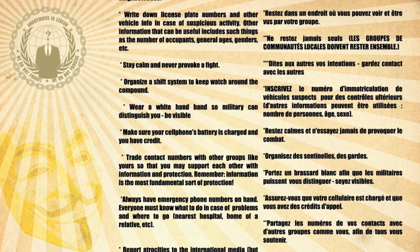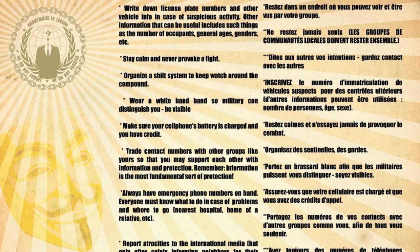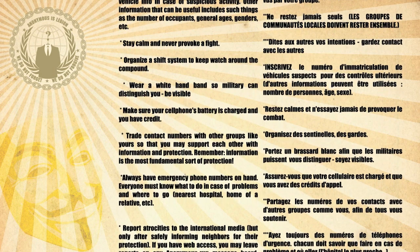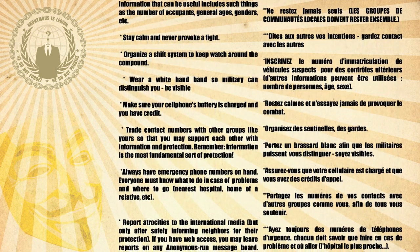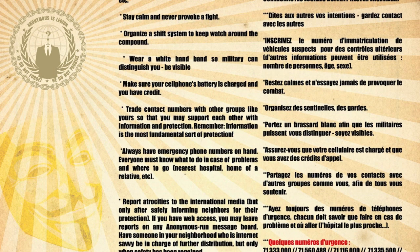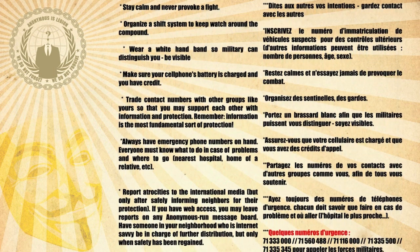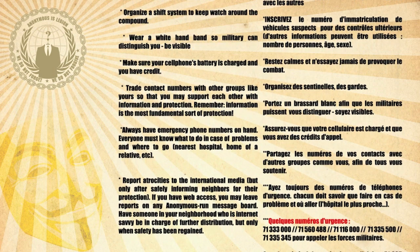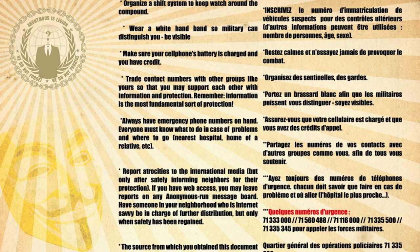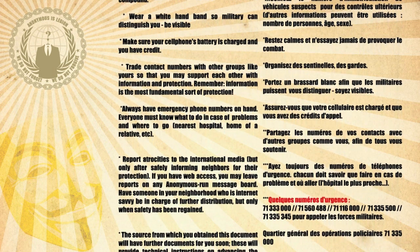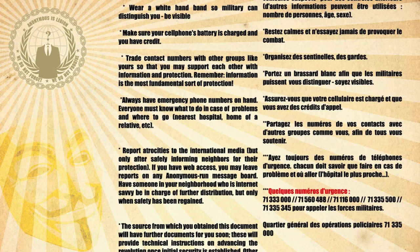Always have emergency phone numbers on hand. Everyone must know what to do in case of problems and where to go — nearest hospital, home of a relative, etc. Report atrocities to the international media, but only after safely informing neighbors for their protection. If you have web access, you may leave reports on any anonymous message board. Have someone in your neighborhood who is internet savvy be in charge of further distribution, but only when safety has been regained.